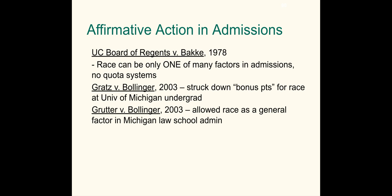Two cases came out of the University of Michigan in 2003. The University of Michigan used to allow bonus points on the application for race — if a particular racial group was underrepresented, they could bump up the points for that group's admissions. The Supreme Court said you can't use bonus points because that could push somebody over the edge into getting in or not. However, the Court did allow the University of Michigan to include race as a general factor on the application, alongside many other things like test scores, jobs, activities, and grades.